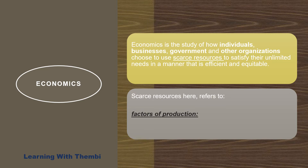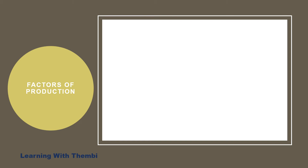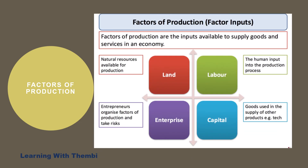When we say we have scarce resources, we are referring to the factors of production. Factors of production refers to the inputs which are needed in the production process to produce final goods and services. At your level right now, we will only talk about the four factors of production. We're going to focus on land, labour, capital, and entrepreneurship.